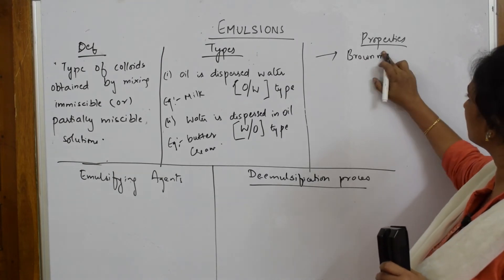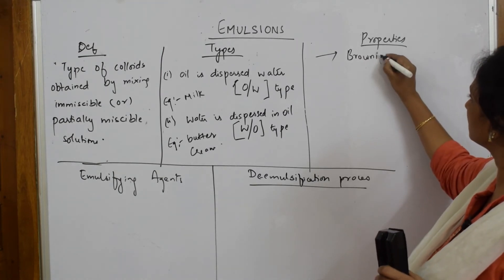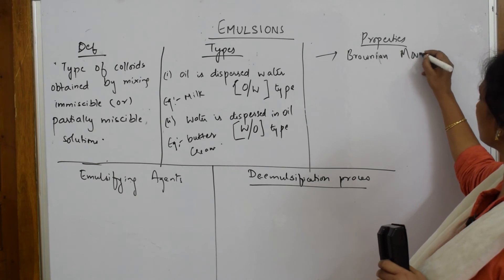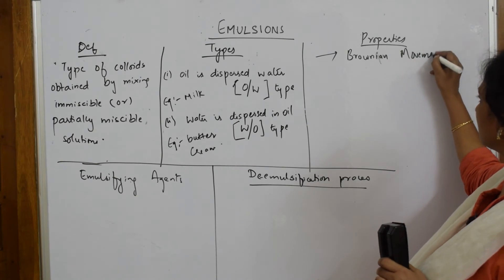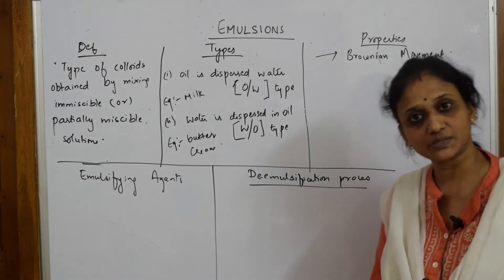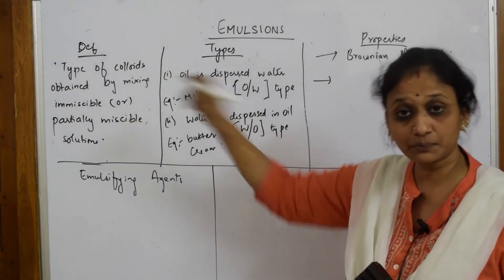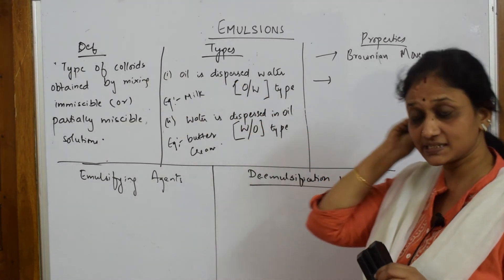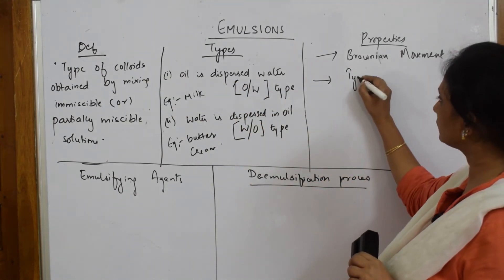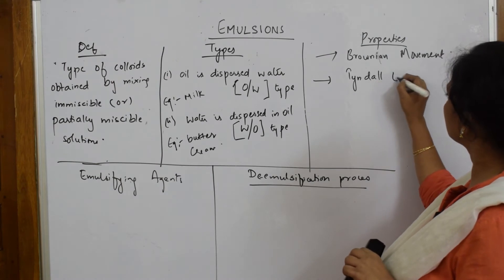Now for the properties of emulsions: they show Brownian motion, which is the zigzag motion of dispersed particles. Since emulsions are a type of colloid, they also show the Tyndall effect.